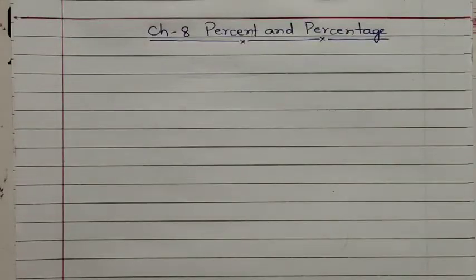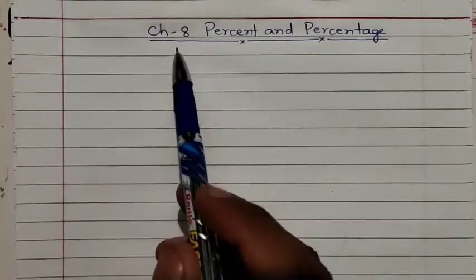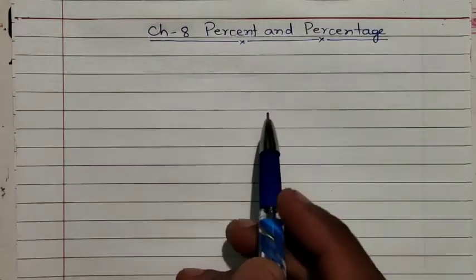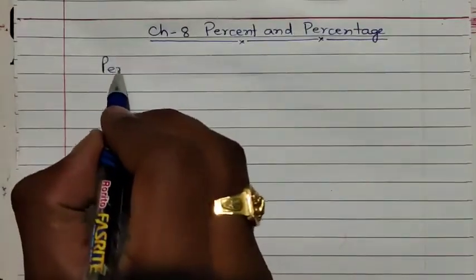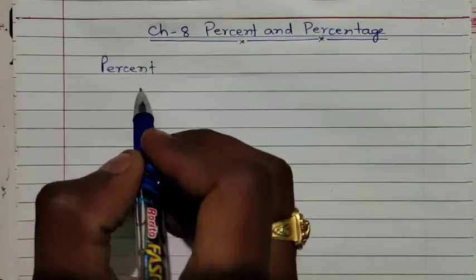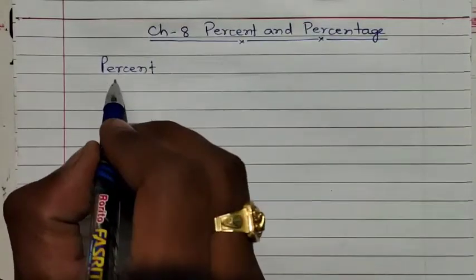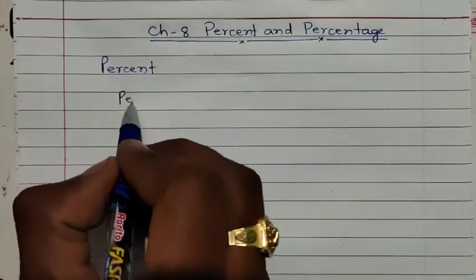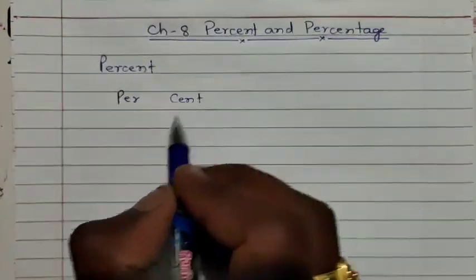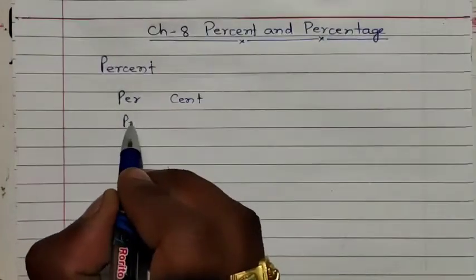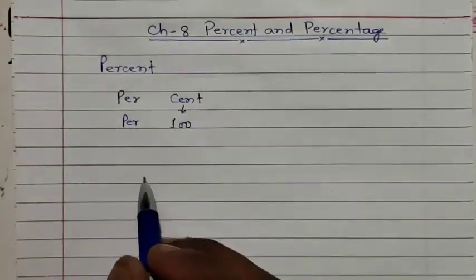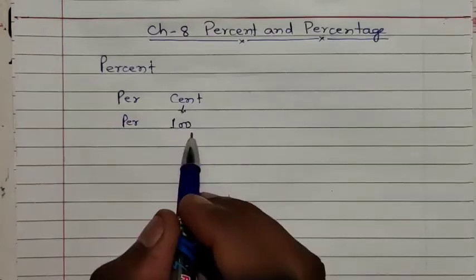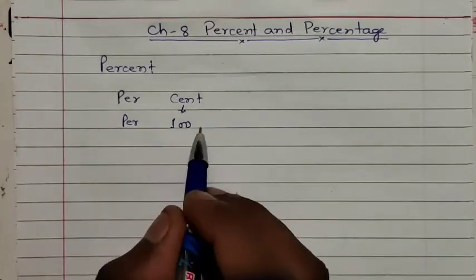Good morning students. As in our live class, we have started our new chapter and the name of the chapter is Percent as Percentage. First, we will learn about the meaning of percent — what does percent mean? Percent is made up of two terms: 'per' and 'cent'. The meaning of cent is hundred, so percent means per hundred.